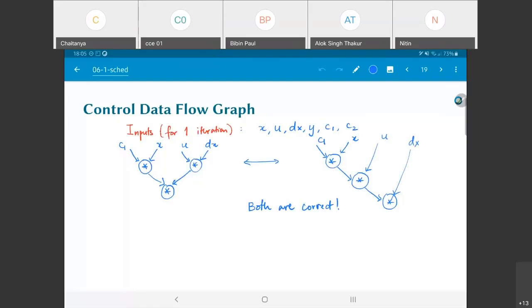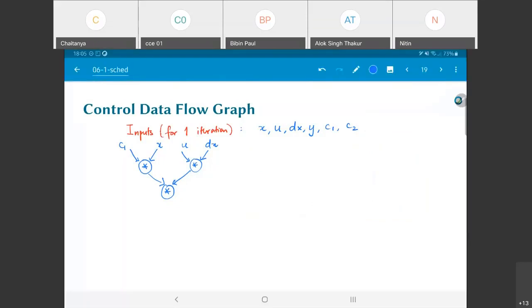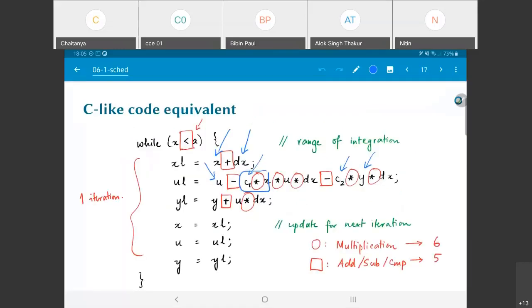Either one of these could have been used in order to construct the data flow graph. What I am going to do is basically just assume that this is the way that I'm going to compute c1*x*u*dx. What else do I need to do? I need to do c2*y*dx.